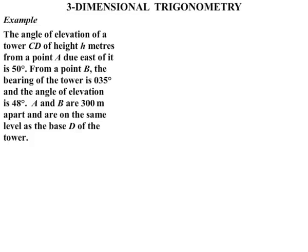Now in this lesson we do some work on three-dimensional trigonometry. The angle of elevation of a tower CD of height H meters from a point A due east of it is 50 degrees. From a point B the bearing of the tower is 035 degrees and the angle of elevation is 48 degrees. A and B are 300 meters apart and are on the same level as the base D of the tower.